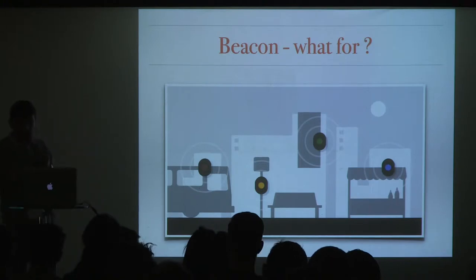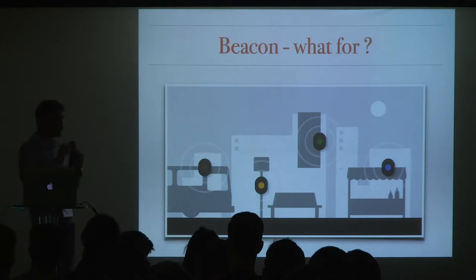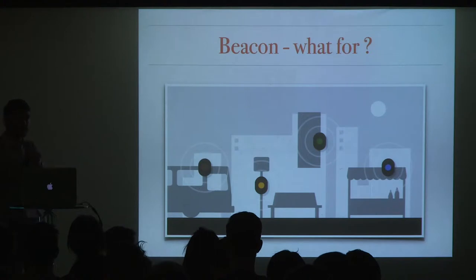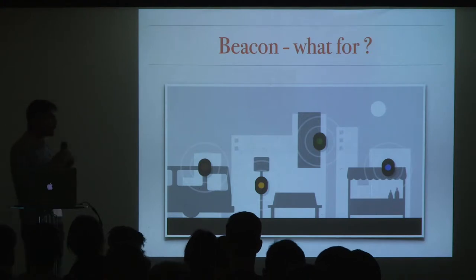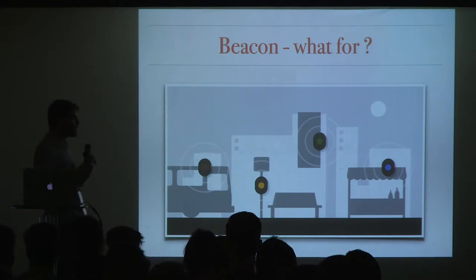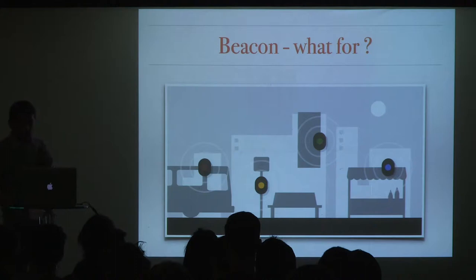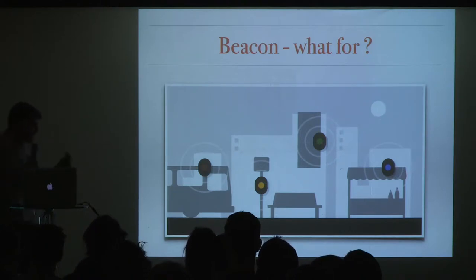Beacons are all about proximity — you're detecting the beacons if you are in range. You don't know precisely how far you are from the beacon, but you know roughly in an abstract manner: if you're far, like 10 or 20 meters; if you're near, like a few meters; or if you're immediately next to the beacon. It's all about giving the user a better proximity experience.